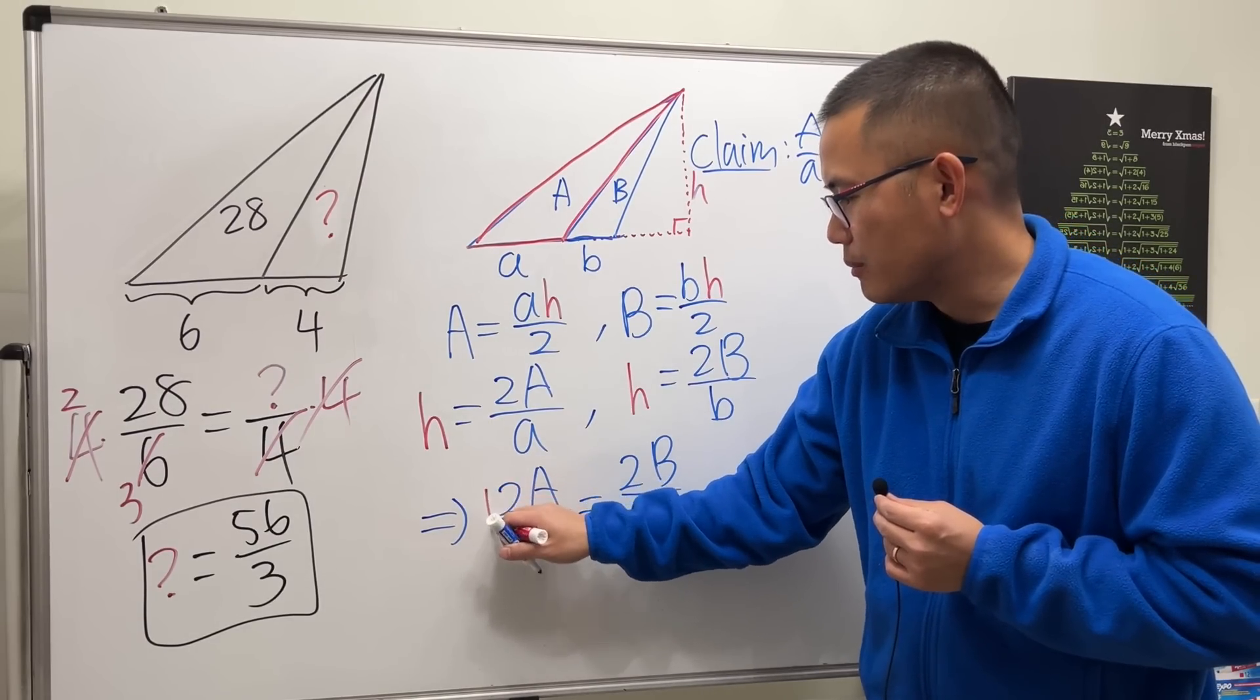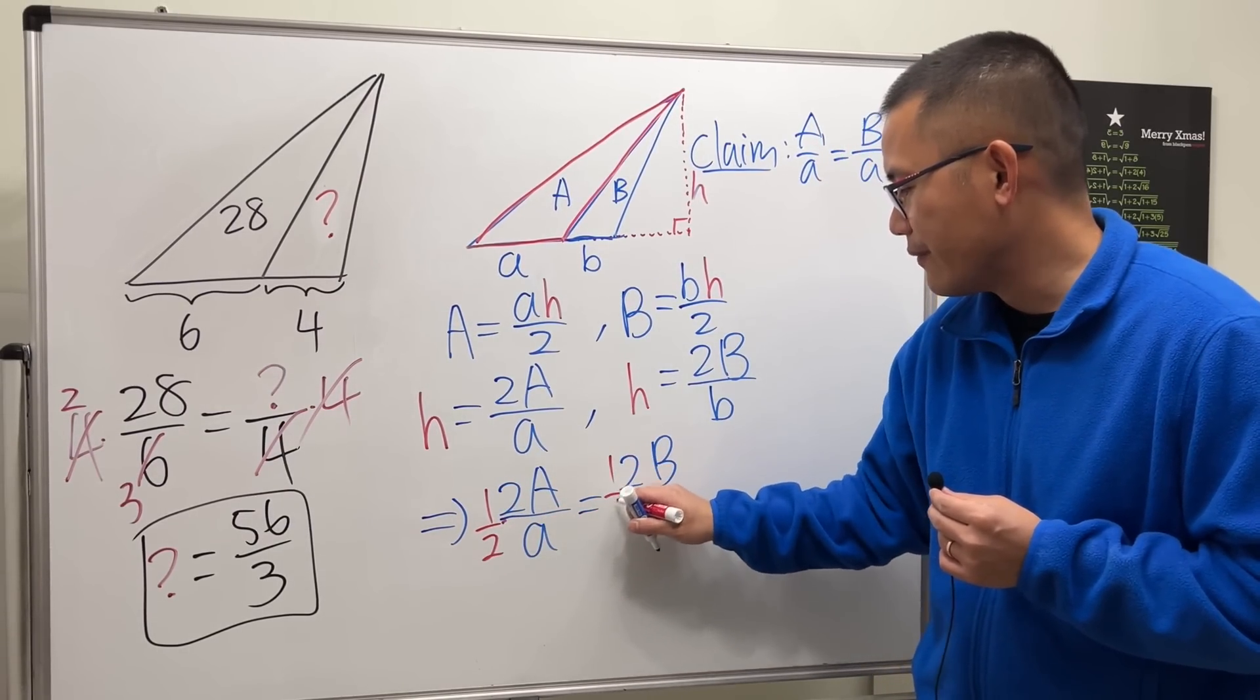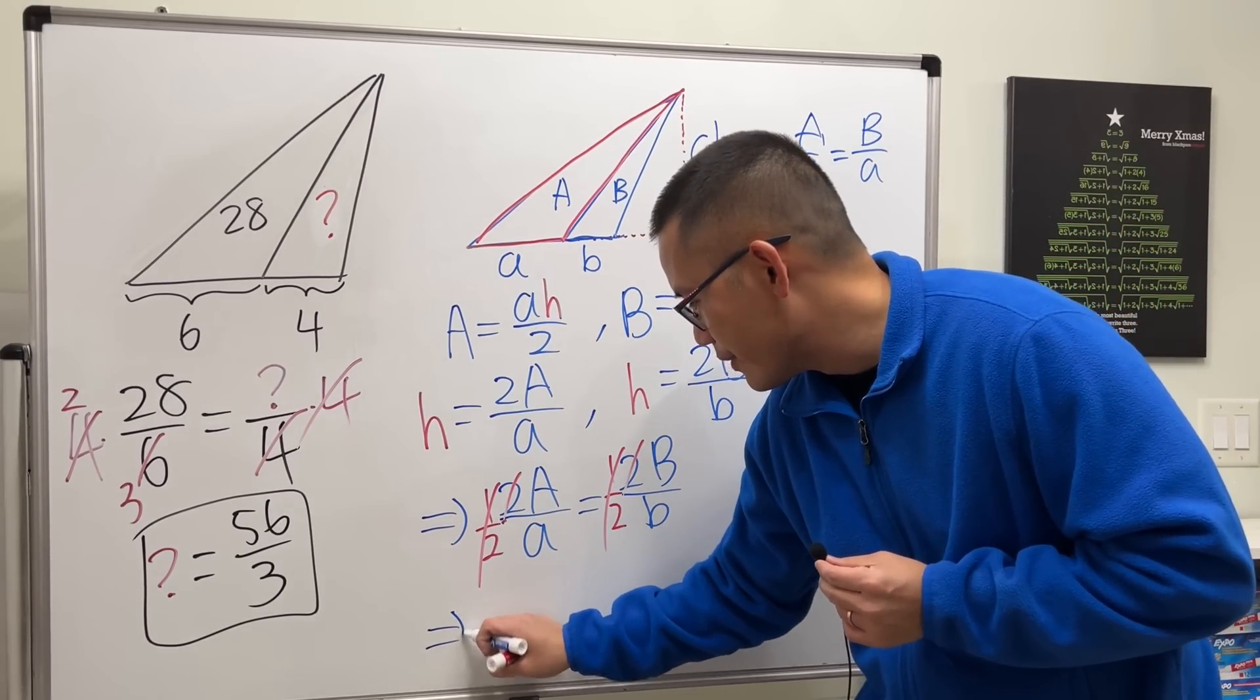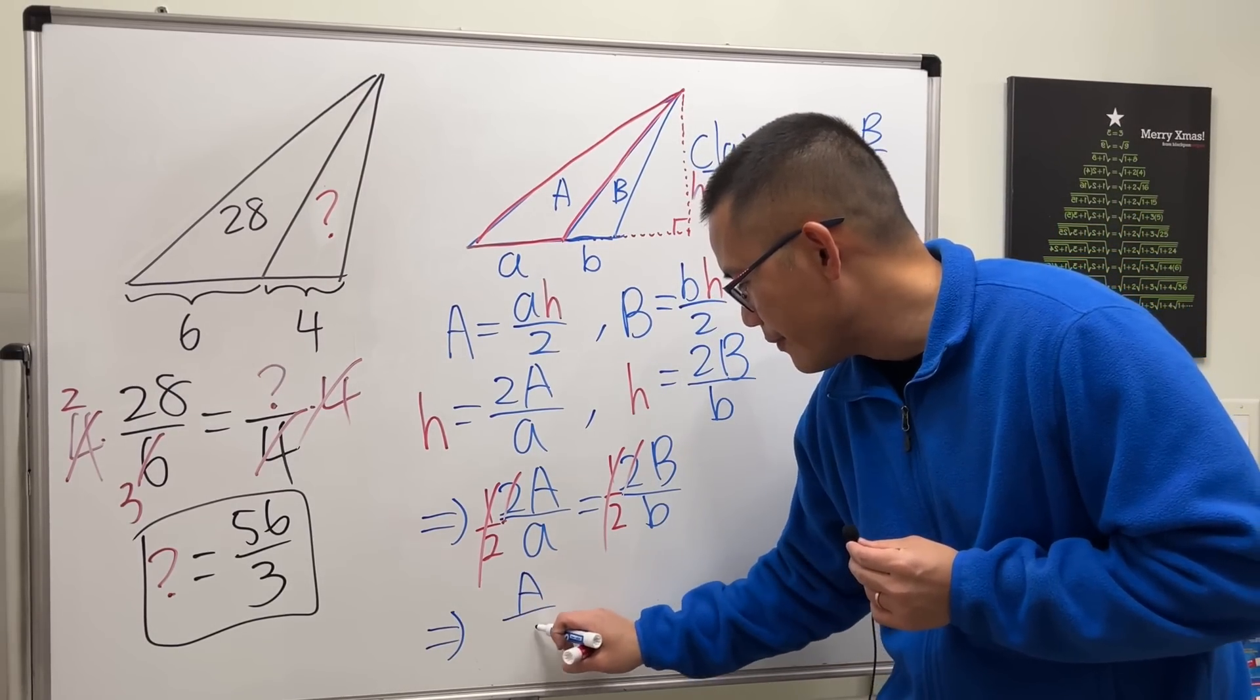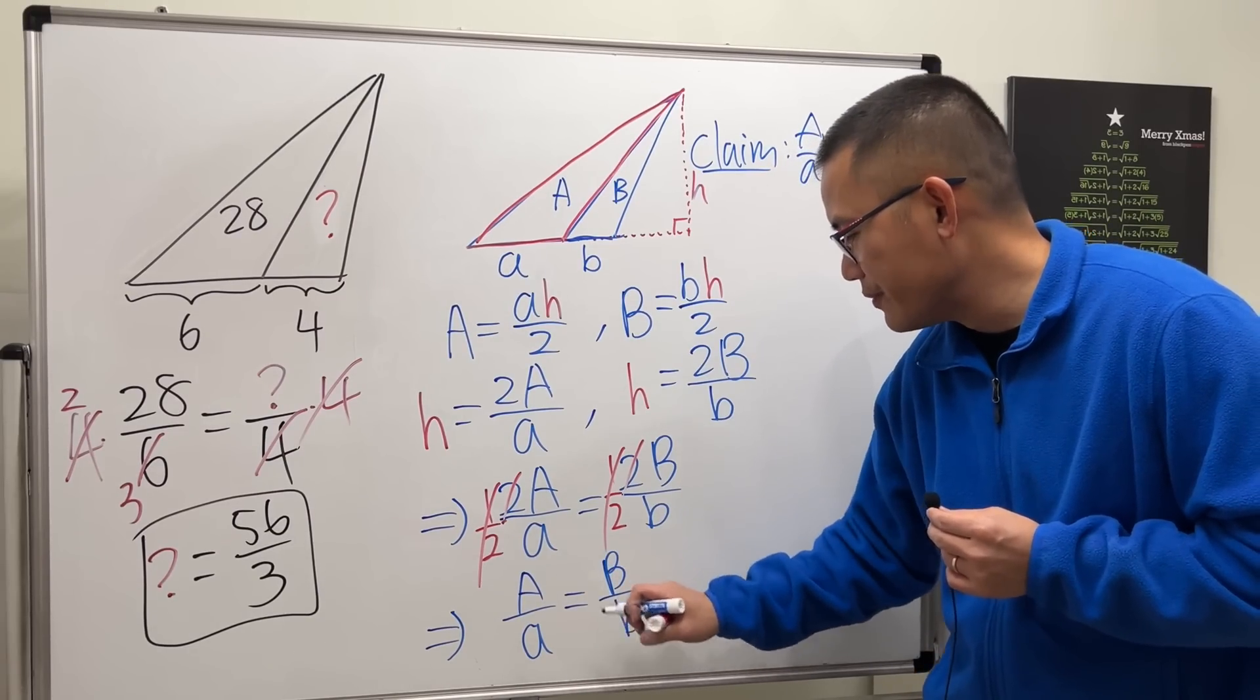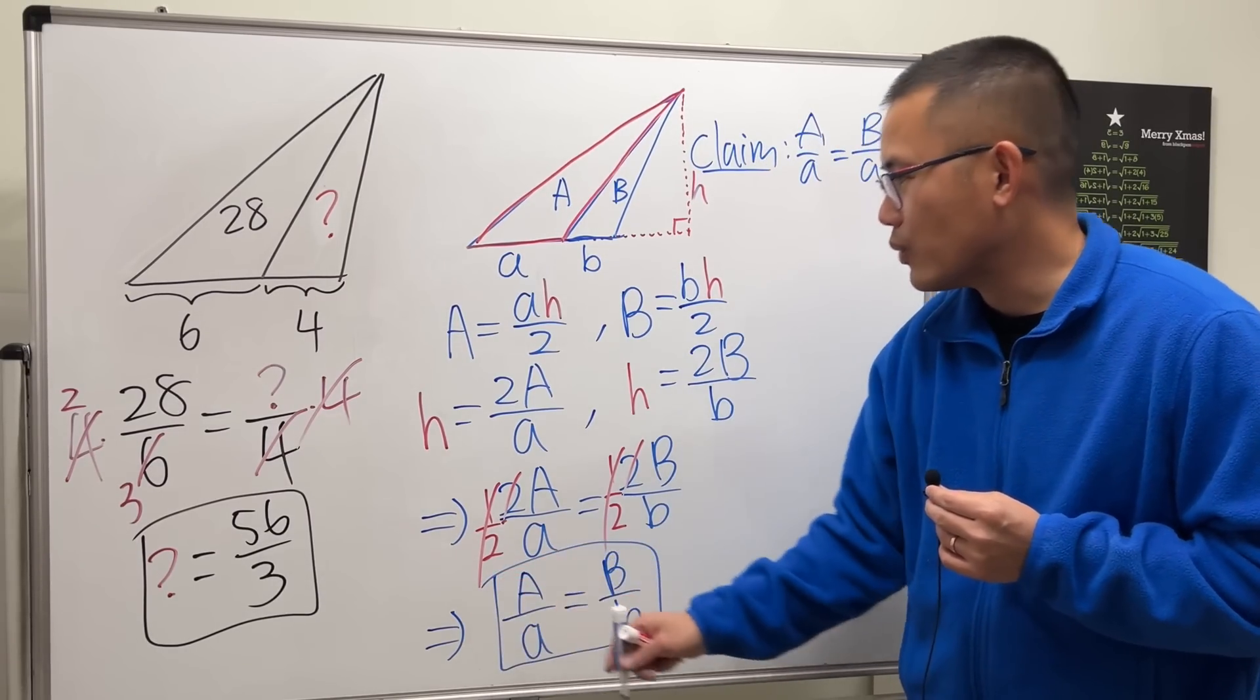Both sides have a constant multiple 2, so we can cancel them out. Technically you can say multiply both sides by one-half so that this and that cancel, this and that cancel. And there we have it: capital A over little a is equal to capital B over little b, which is what we are trying to show.